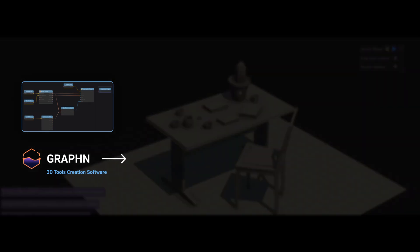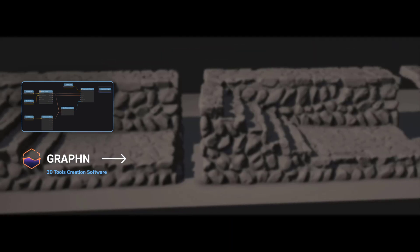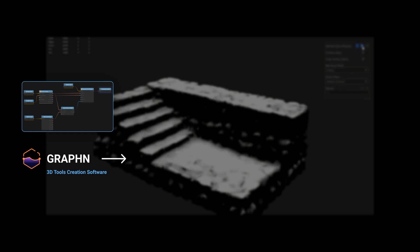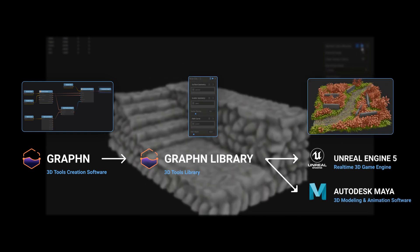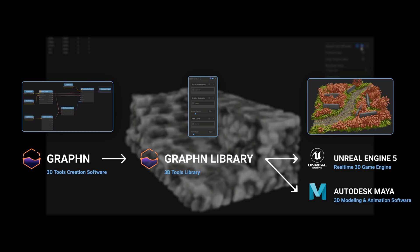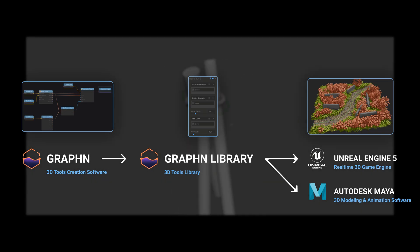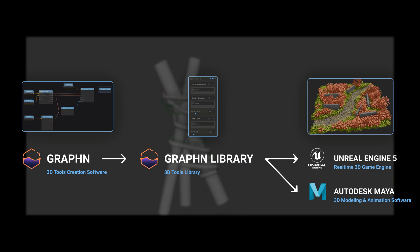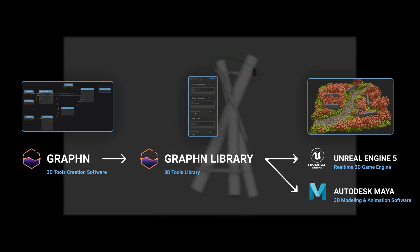Graphen is deeply embedded with Autodesk Maya and Unreal Engine, which means you can use it to create scattering tools, but also PBR material creation tools, FBX exporters, a calculator, cables, and so much more. Once you've done your tool, you can export it to the Graphen library, a plugin that sits right into Unreal Engine and Autodesk Maya, and gives you access to tools without having to touch a single node or a line of code.